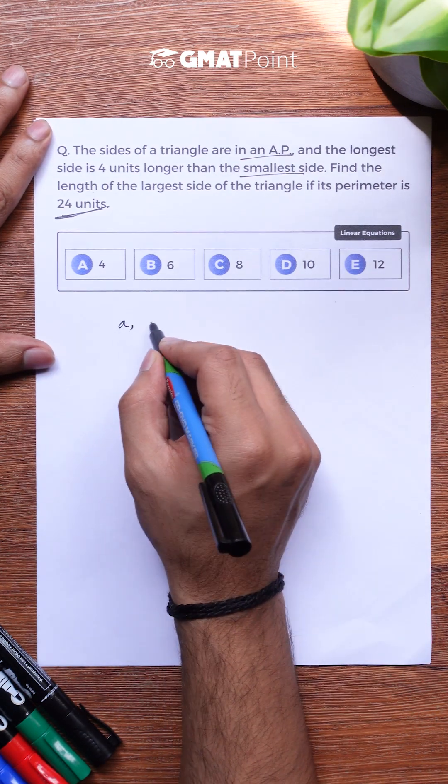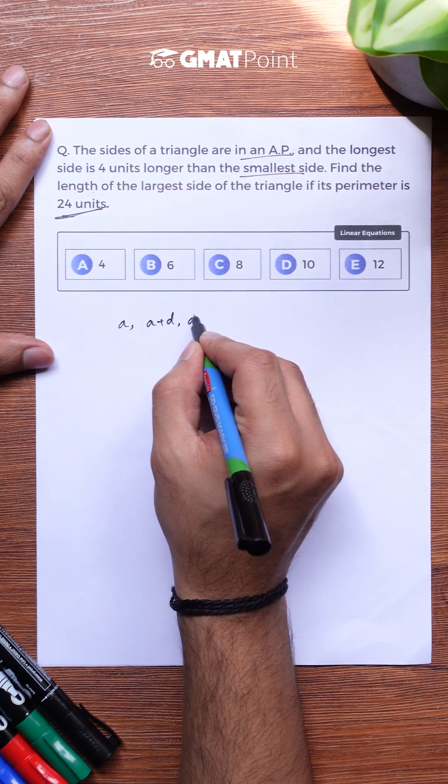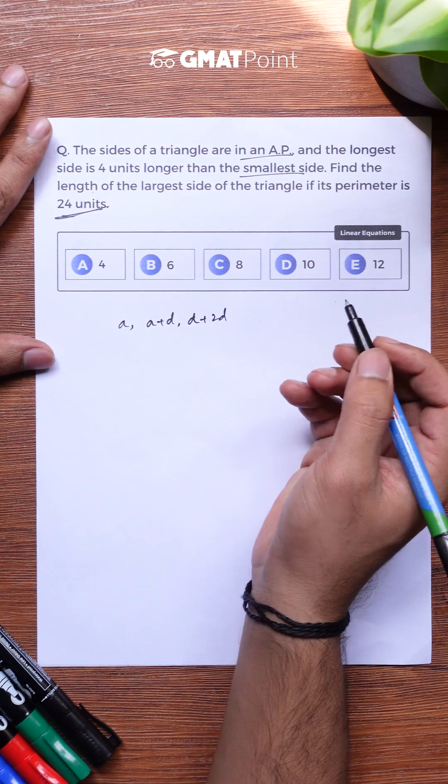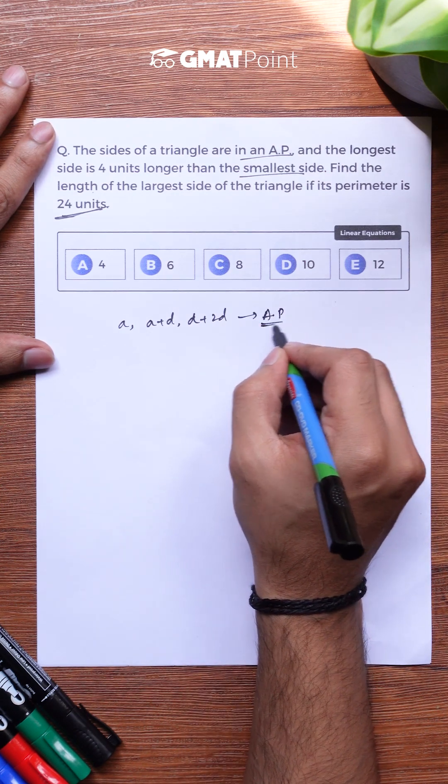Let us assume the sides of the triangle to be A, A plus D and A plus 2D because we are told that all these 3 sides are in AP.